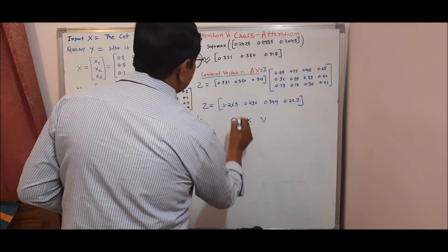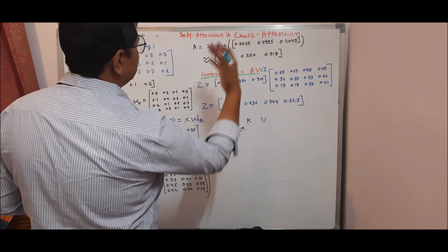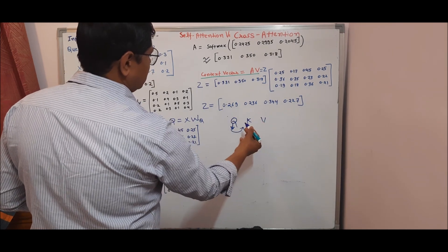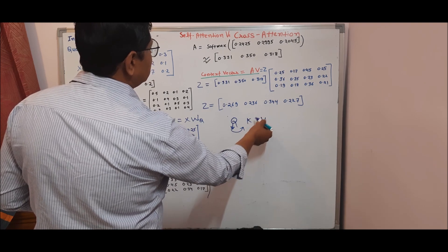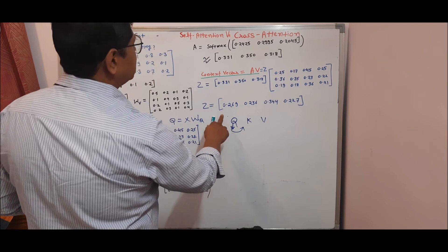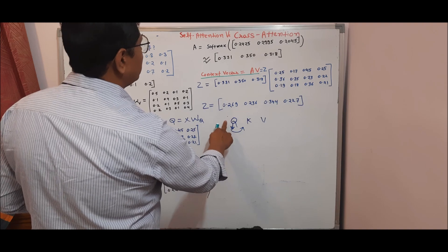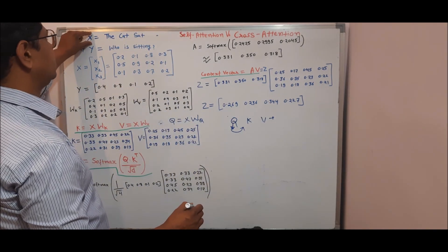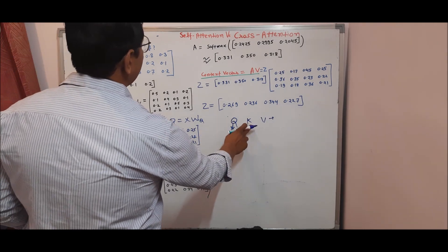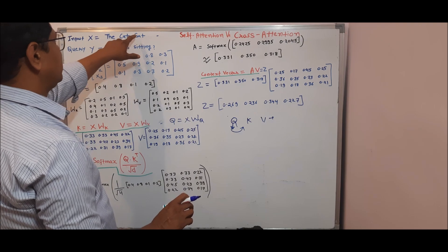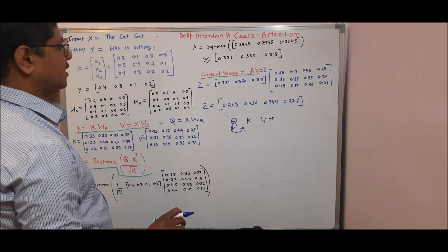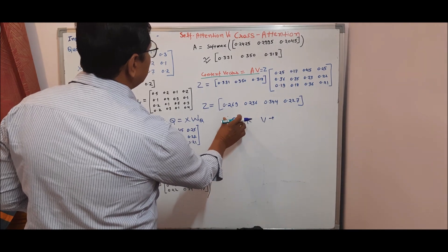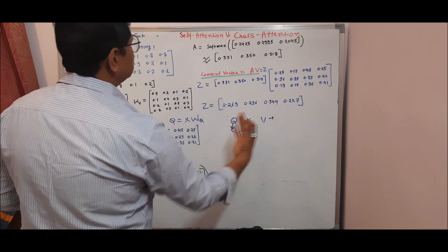In the case of self-attention, suppose we are calculating word-level attention. Our query will be some word and we calculate the attention with respect to that word. In self-attention, all the query elements come from the same input text. For example, if our input text x is 'the cat sat', then all query, key, and value words come from that same sentence. The demerit is we cannot compute the attention score with respect to some external factors.